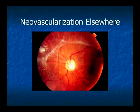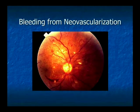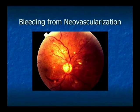The problem with neovascularization is it leads to larger patches of bleeding. This is a patch of blood sitting right on top of the retina — bleeding from neovascularization elsewhere. That's actually a pretty small hemorrhage for the proliferative form; they can get much larger than that.